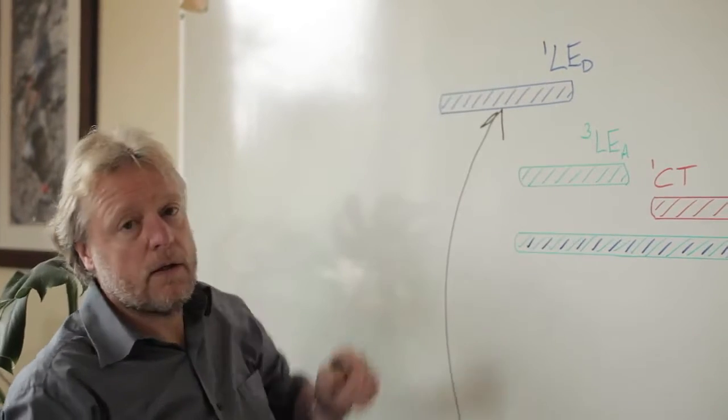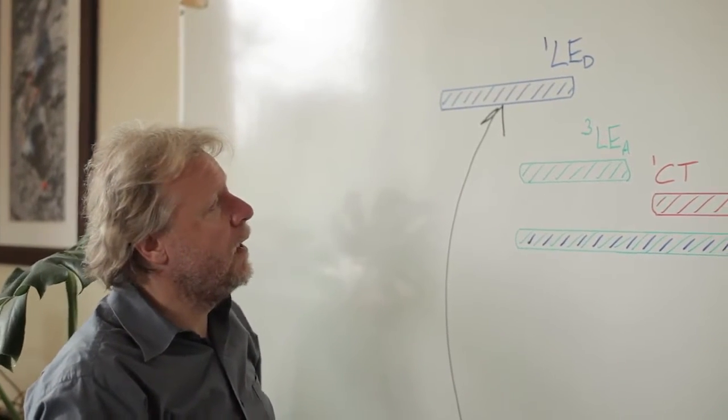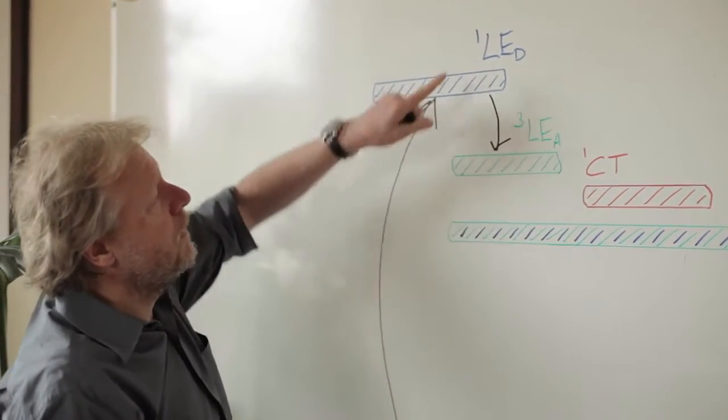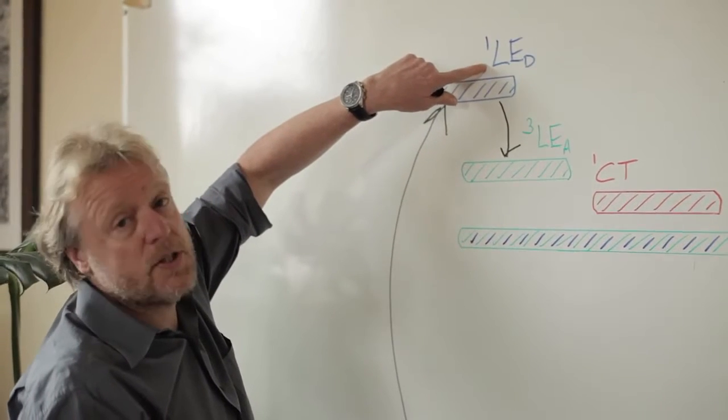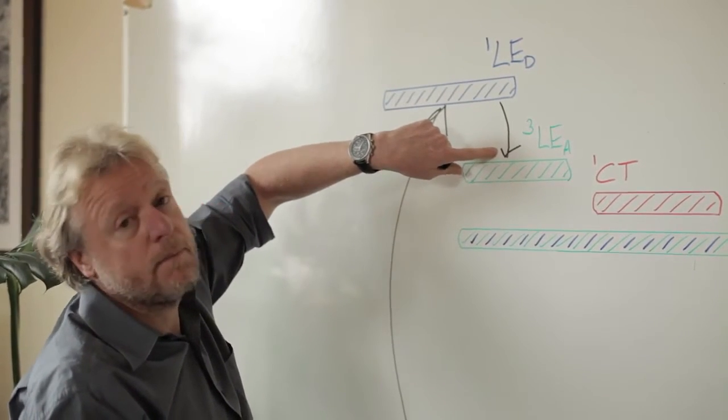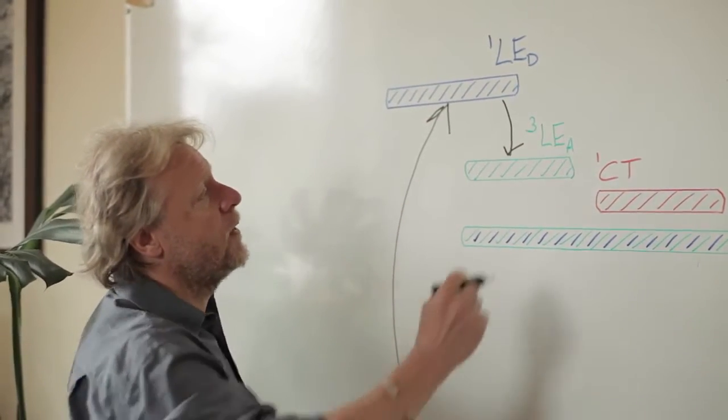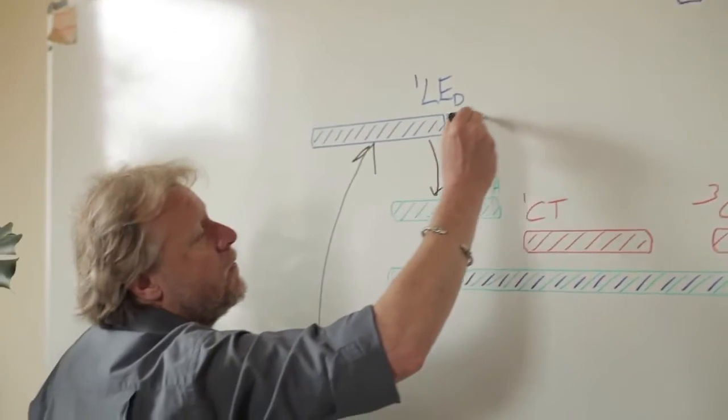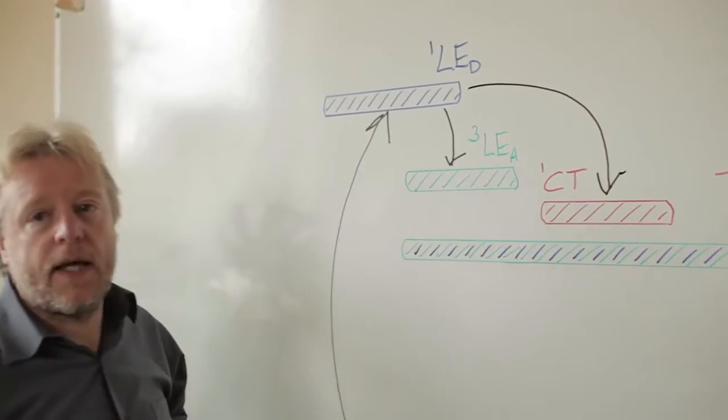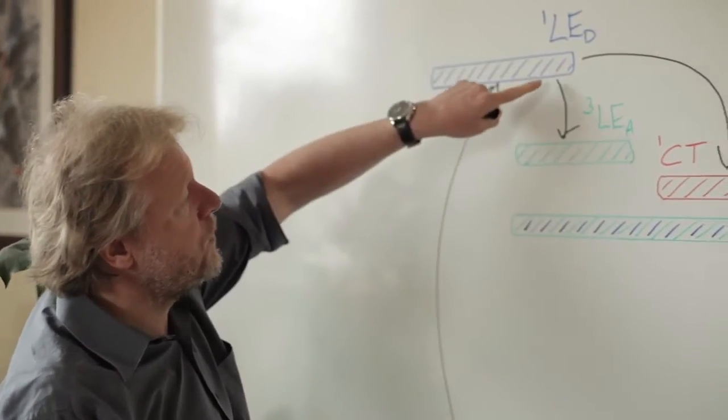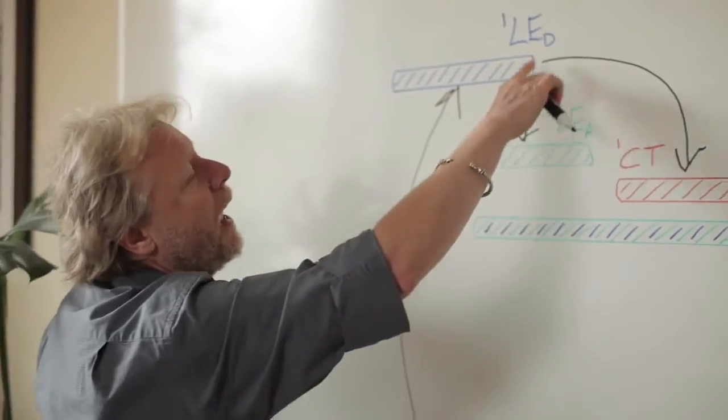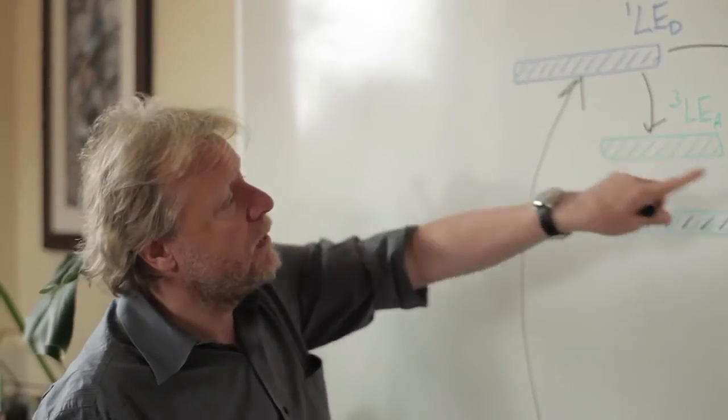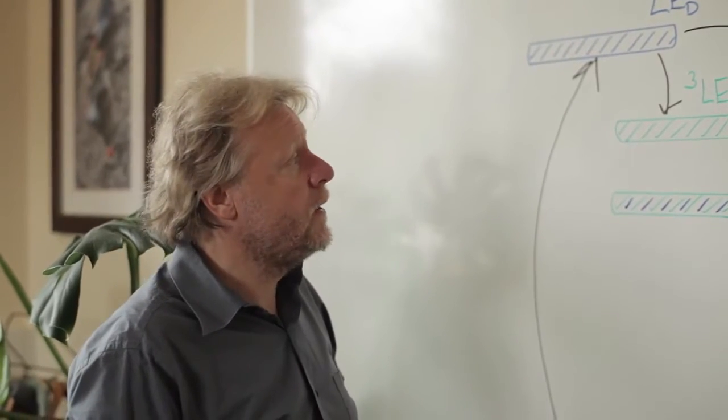When I'm up here, a few things can happen. I can get inter-system crossing so that the singlet donor state becomes a triplet donor state. And I can have the charge transfer process, so the electron gets pushed from the donor onto the acceptor to form the CT state. And there's going to be a competition between these processes.